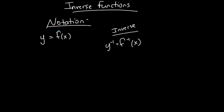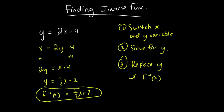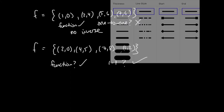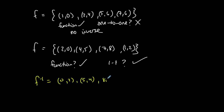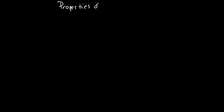Let's find the inverse of the one-to-one ordered pair set. Since the inverse exists, and since finding the inverse means switching x and y, I simply switch all the x's and y's in each ordered pair to get the inverse set.